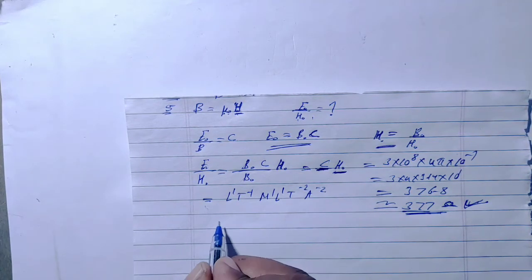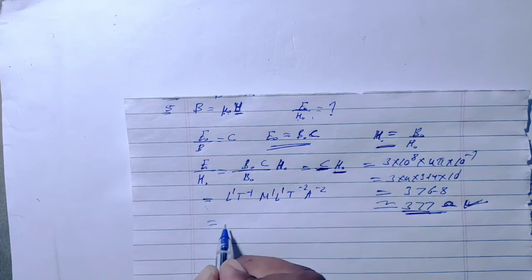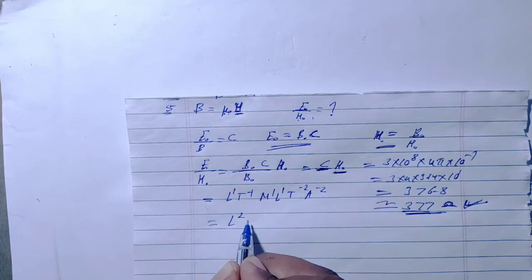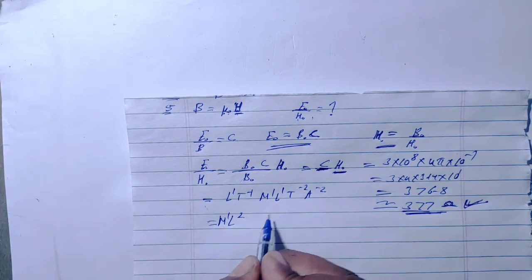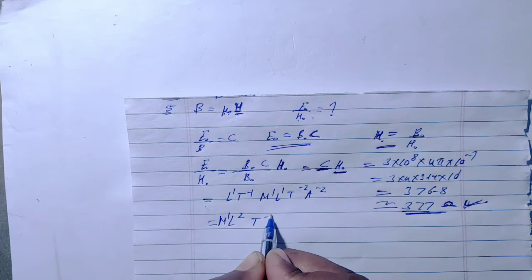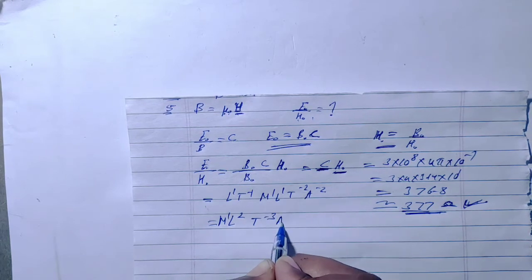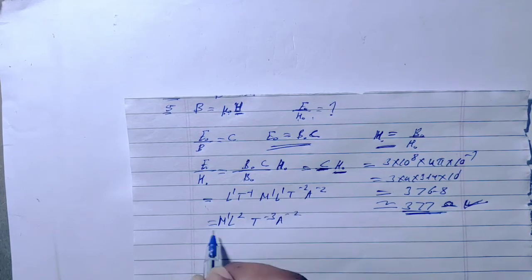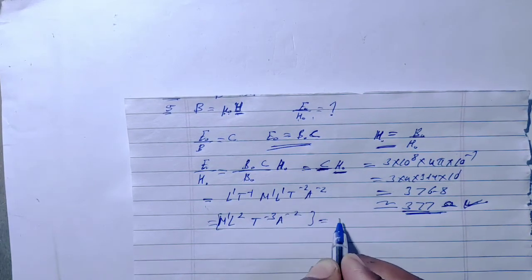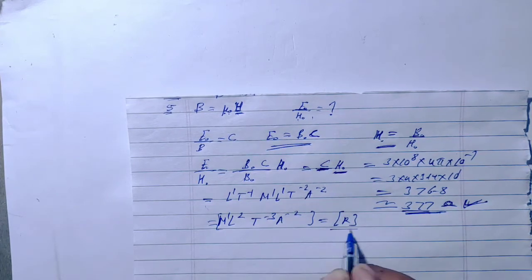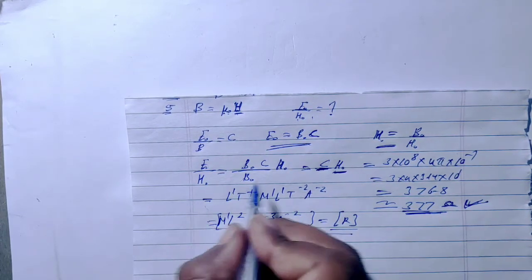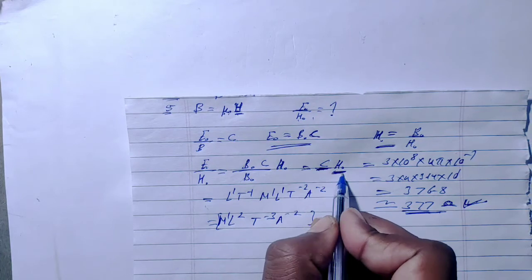Combining dimensions: L squared gives L2, M stays M1, T becomes T minus 3, and A gives A minus 2. This is equal to the dimension of resistance, confirming that E0 by H0 has dimension of resistance.